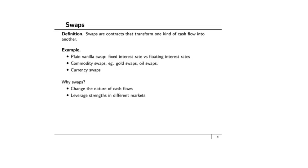People use swaps to change the nature of cash flows. For example, to lock in the price of oil for the next five years, I can contract with someone who pays me the floating price of oil while I pay them a fixed price set at t=0. I receive the floating price of oil and use it to purchase oil in the spot market, paying a fixed price to my counterparty — effectively fixing my oil cost. The same principle applies to gold, currencies, and similar commodities.